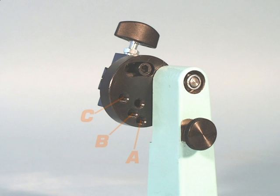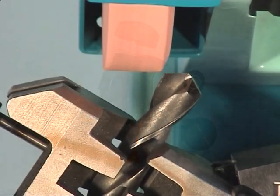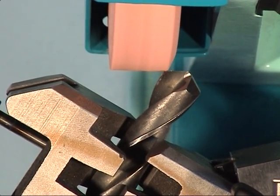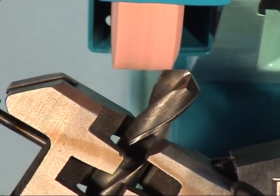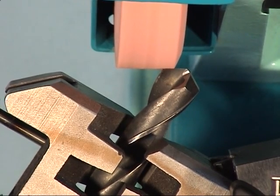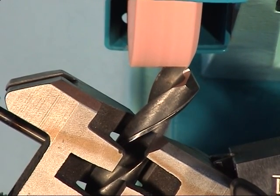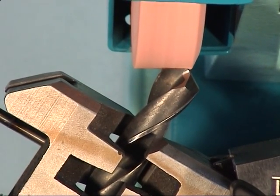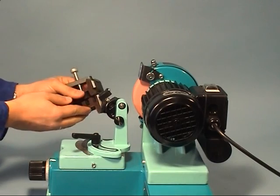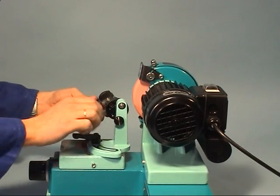For grinding the cutting edges, lock the pivoting mechanism in position A. Move with the prism feed up to the grinding wheel and grind the first edge. Turn the drill and grind the second edge using the same settings.